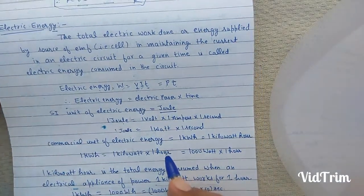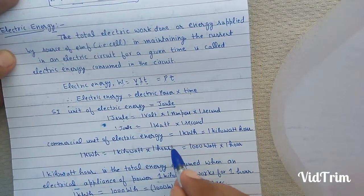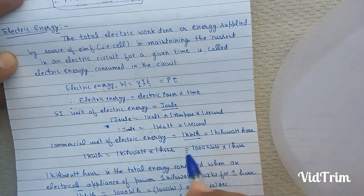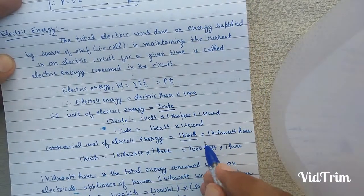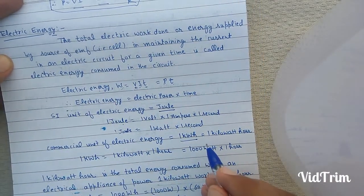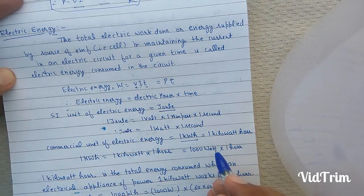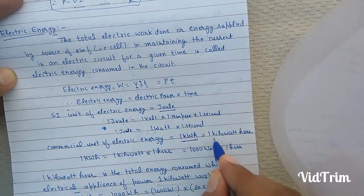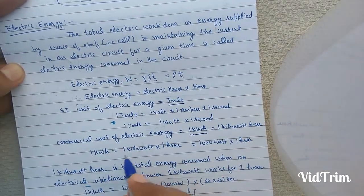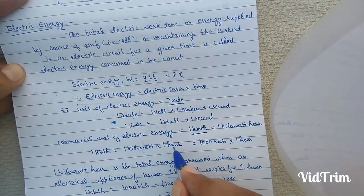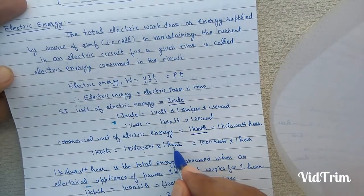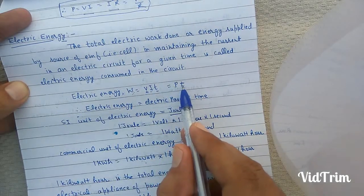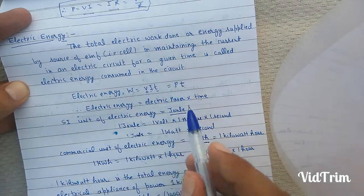The commercial unit of electrical energy is 1 kilowatt hour, also called the board of trade unit or the unit of electricity. Therefore, 1 kilowatt hour equals 1 kilowatt multiplied by 1 hour, because electrical energy is electric power multiplied by time.